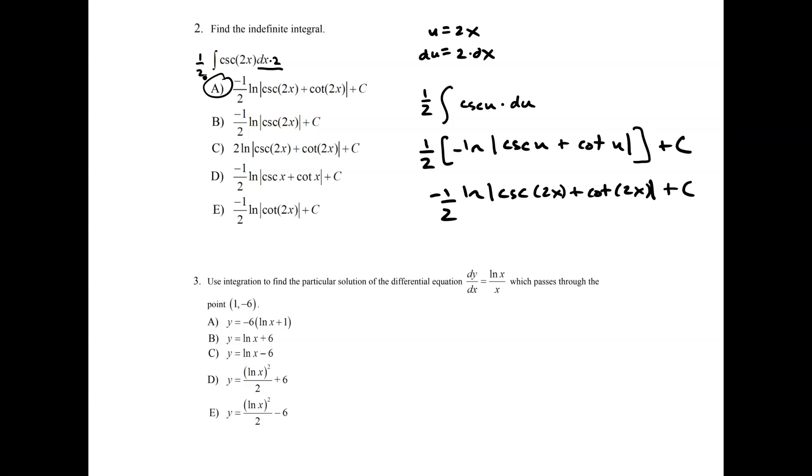Okay, and let's go to number 3. Let's use integration to find the particular solution of the differential equation dy over dx equals ln of x over x, which passes through the point (1, -6). So when I'm solving a differential equation, a lot of times what I'll do to start is I'll bring this to the other side. So I have dy equals ln of x all over x times dx.